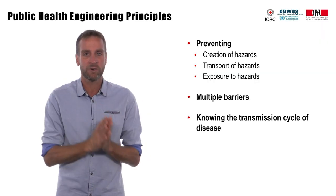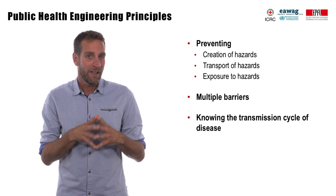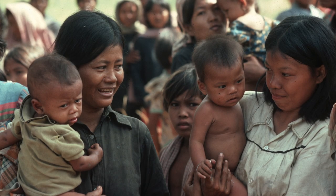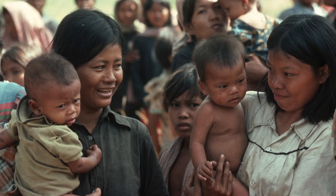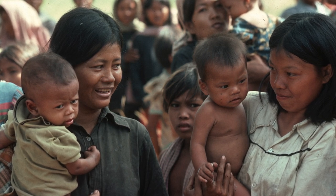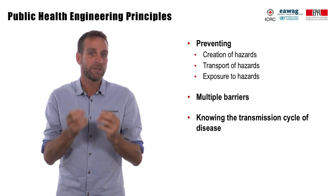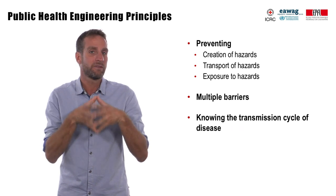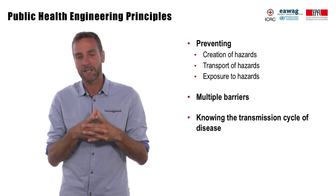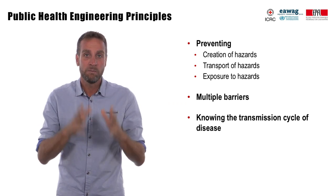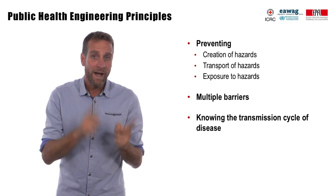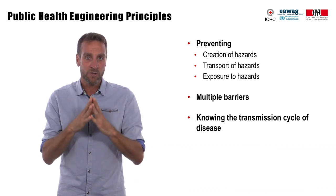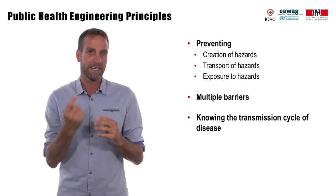Another example from the Cambodian refugee camp: moving the camp away from the breeding sites of mosquitoes resulted in a reduction of malaria mortality by half and the incidence rate by two-thirds. The role of the engineer is to put barriers at the creation, transport, and exposure to hazards to improve health. Because one barrier rarely functions at 100%, the public health engineer should put multiple barriers. To know where and when to place these barriers to stop the vicious cycle of disease transmission, the public health engineer should have a very good understanding of the transmission cycle of the disease.